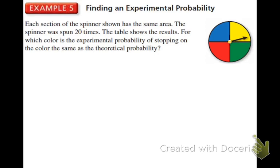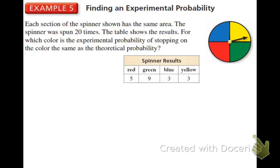The table shows the results. For which color is the experimental probability of stopping on the color the same as the theoretical? The main difference between experimental and theoretical probability is that one has already happened, one's been tested. Experimental is the one that's been tested, and it's represented by the chart.